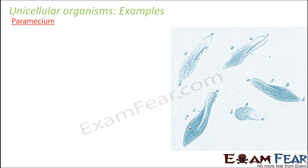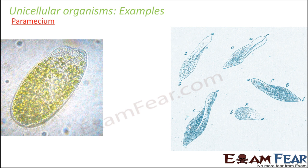The third example is Paramecium. They have cilia for locomotion and are also a type of protozoa. They are generally found in freshwater or marine environments. They are often called the 'slipper animal' because of their shape, which resembles a slipper.